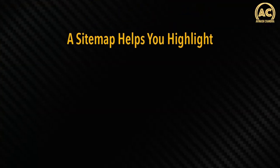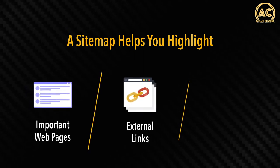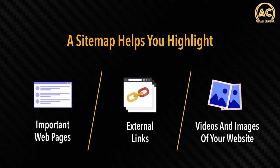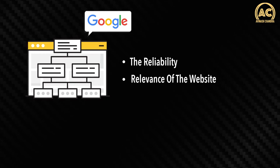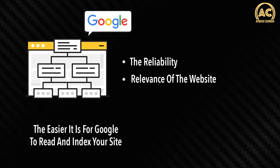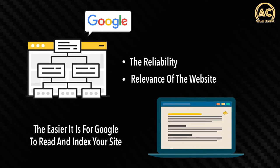A sitemap helps you highlight important web pages, external links, videos, and images of your website. Since crawlers can't find each of the thousands of web pages on a website on their own, a sitemap helps them easily identify and index them. This helps Google understand the reliability and relevance of the website. The easier it is for Google to read and index your site, the higher the chances of your pages ranking.